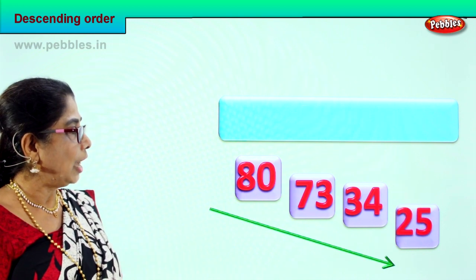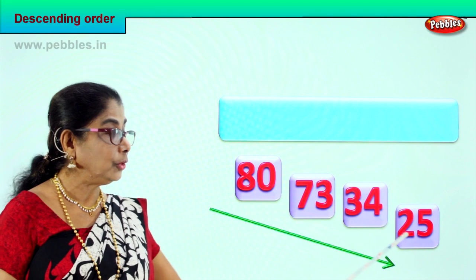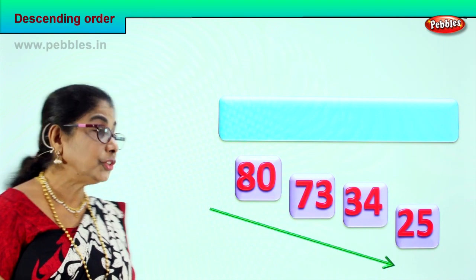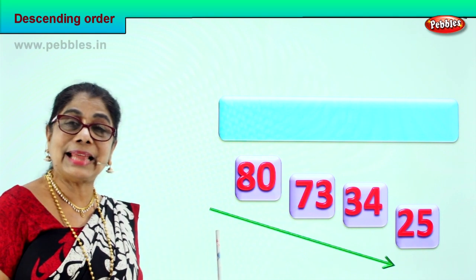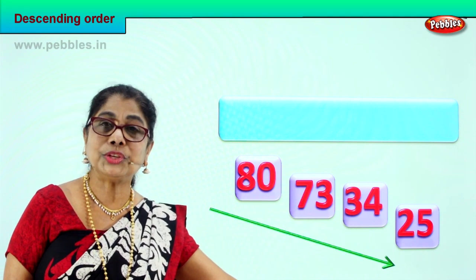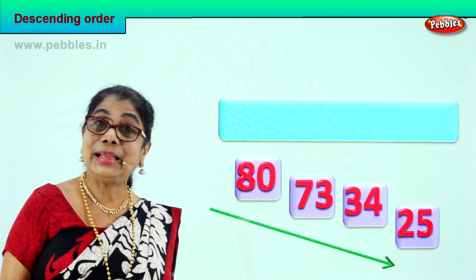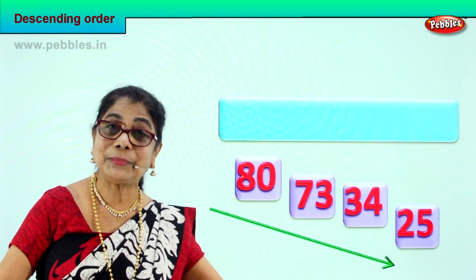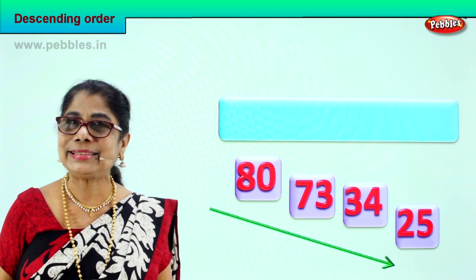Okay? Now eight tens, seven tens, three tens, two tens — what have you done? You have arranged all four numbers in descending order, starting with the biggest to the smallest. Did you enjoy doing it? Good. Shall we go to our next exercise?